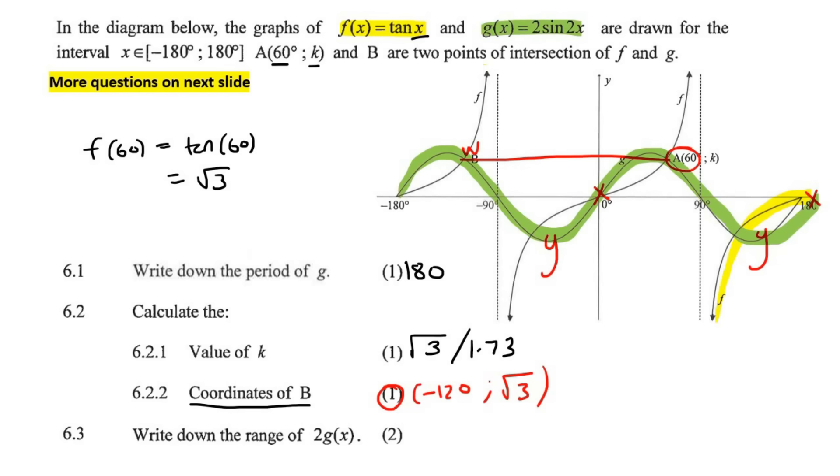This question says, write down the range of 2g(x). So let's ignore the 2 in the front. Let's just look at g of X for now. So g of X is the sin graph. So its range at the moment goes from, they haven't given us numbers. But you should know that this 2 in the front here makes the graph go up to 2 and down to negative 2. But now if they put a 2 in the front, then that'll multiply the graph by 2. So it'll actually go all the way up to 4 and down to negative 4. So the range will now be, you could say, y is an element going from negative 4 to positive 4. If you prefer interval notation, you could say y is bigger than or equal to negative 4, smaller than or equal to 4.